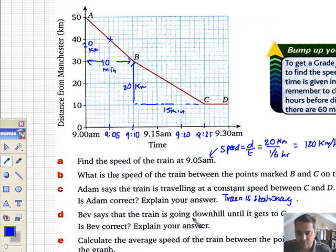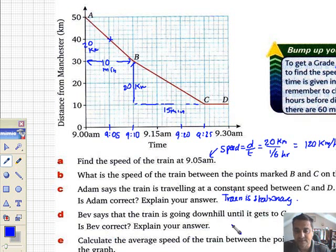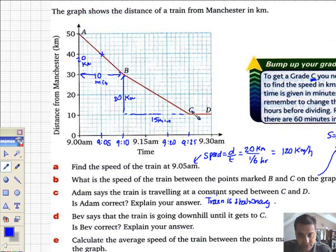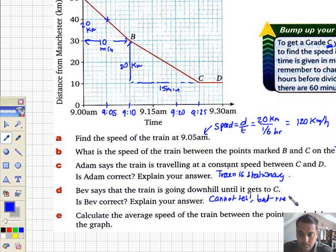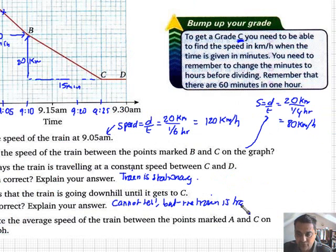Bev says that the train is going downhill until it gets to C. Is Bev correct? Explain your answer. Well, in truth, I explained in the beginning that we're actually going towards Manchester. It doesn't mean to say the train is traveling downhill towards Manchester. It may well be. We do not know. So, first thing is, cannot tell.